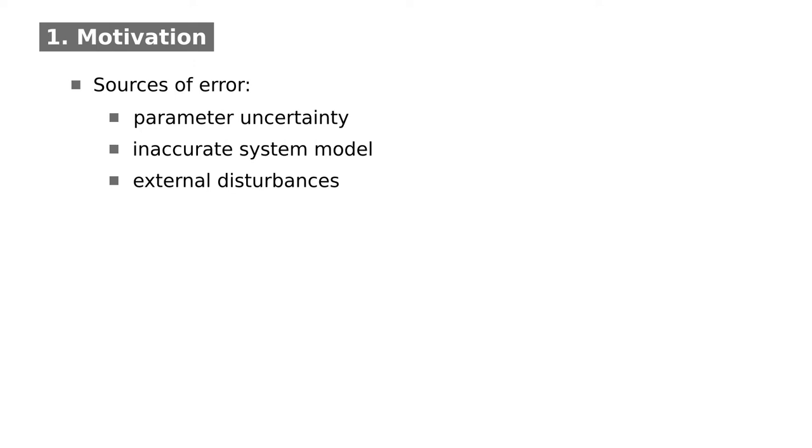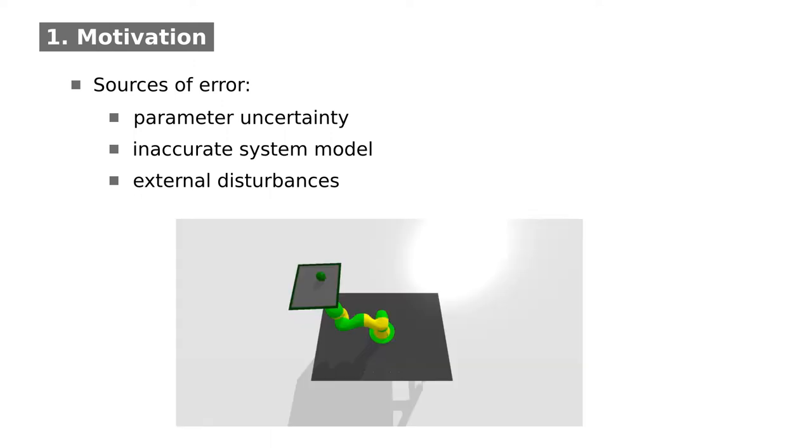Finally, external disturbances during task execution might introduce errors. To illustrate the influence of small errors, this video shows a robot that succeeds in keeping a ball at its initial spot during its movement.